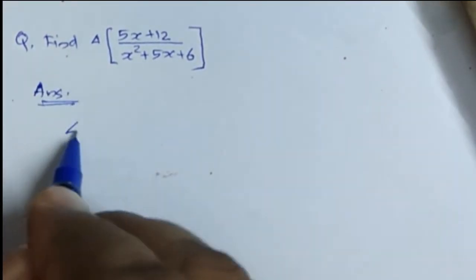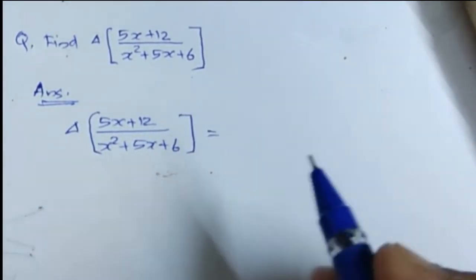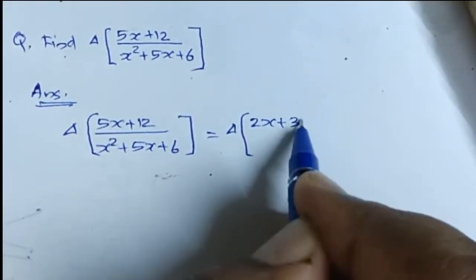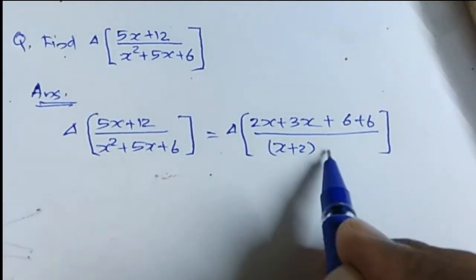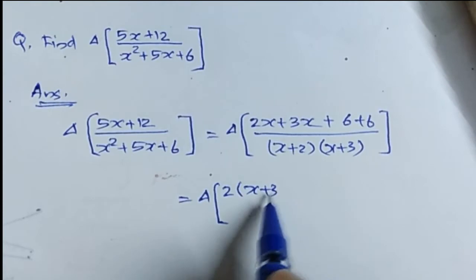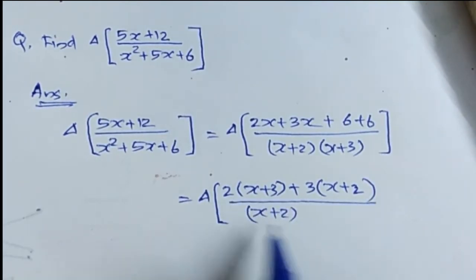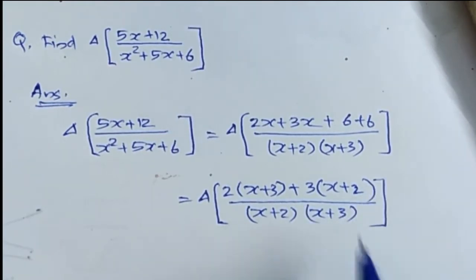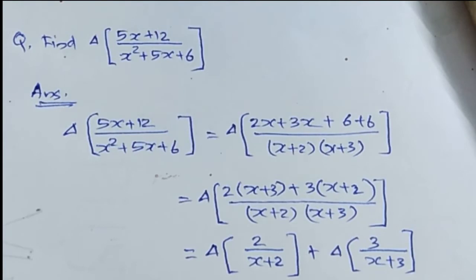Delta of (5x + 12) divided by (x² + 5x + 6) can be rewritten by factoring the numerator as (2x + 3) + (x + 6), and the denominator as (x + 2)(x + 3). Modifying the numerator, we get delta of [2(x + 3) + 3(x + 2)] divided by (x + 2)(x + 3). This simplifies to delta[2/(x + 2)] + delta[3/(x + 3)], following the distributive property of delta.